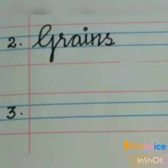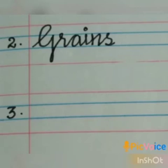Second one: Grains. Grains means 'Thaniyengal' — like nell, godhu (rice, wheat). So 'Thaniyengal' means grains, children. G, R, A, I, N, S. Grains.